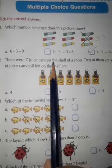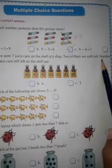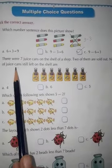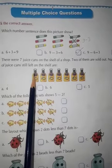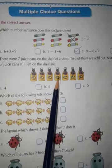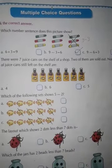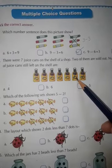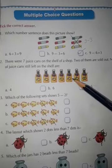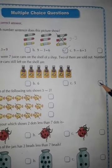Next. There were seven juice cans on the shelf of a shop. Two of them are sold out. How many juice cans are still left on the shelf? Seven juice cans — one, two, three, four, five, six, seven. And two of them are sold out. How many juice cans are left? One, two, three, four, five. So you tick on the five box.